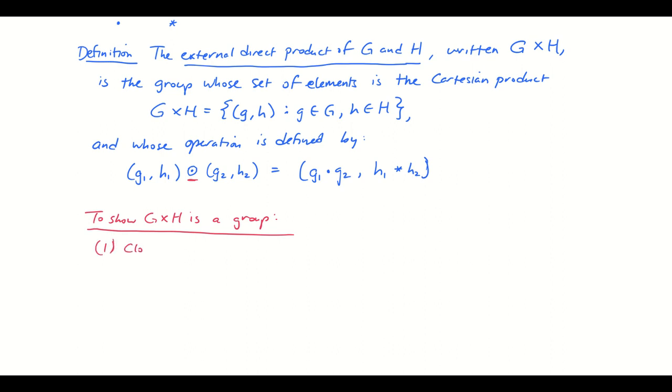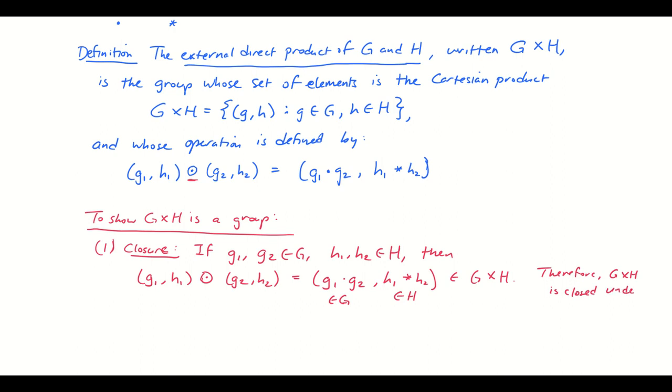So first to verify closure. Well, if g1 and g2 belong to G and h1 and h2 belong to H, then we know that (g1,h1) circle dot (g2,h2) is equal to (g1 times g2, h1 star h2). And this is still in G because we know dot is a binary operation on G. And we know this belongs to H because star is a binary operation on H. So this definitely is an element of G cross H, the Cartesian product. All right. So when we operate any two elements of G cross H, we get an element of G cross H. Therefore, G cross H is closed under circle dot. That's really the proper way to say that.